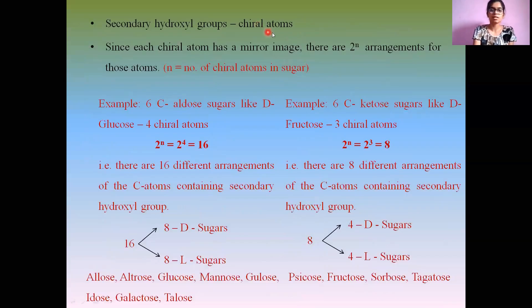The secondary hydroxyl groups play an important role in determining the chirality of atoms. Since each chiral atom has a mirror image, there are 2^n arrangements for those atoms, where n represents the number of chiral atoms in the sugar. Let us consider hexose as an example: hexoaldosis and hexoketosis.